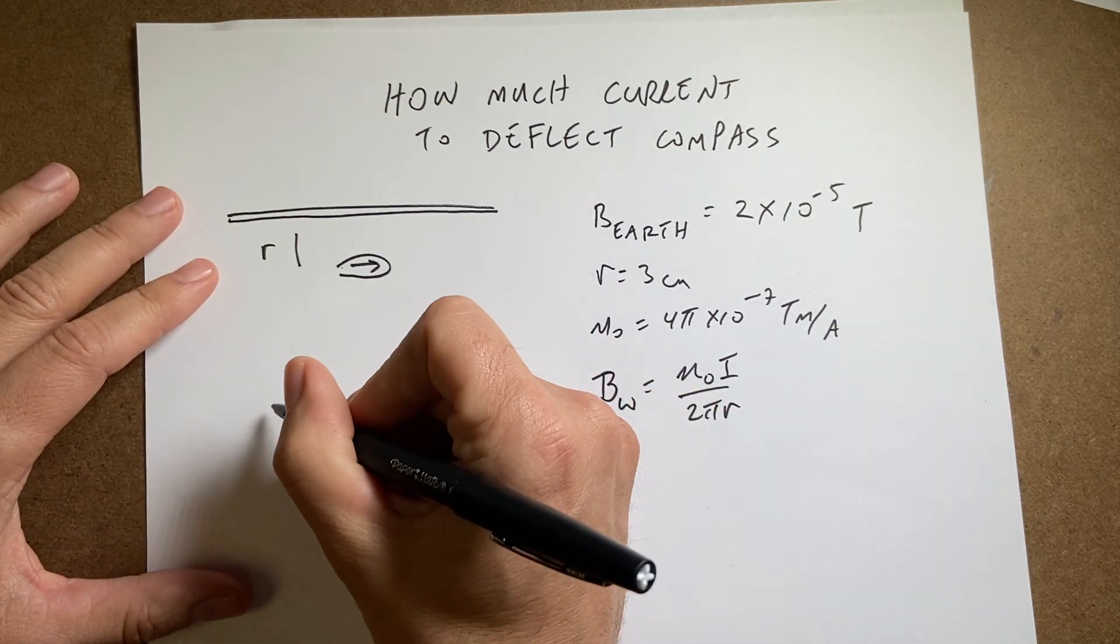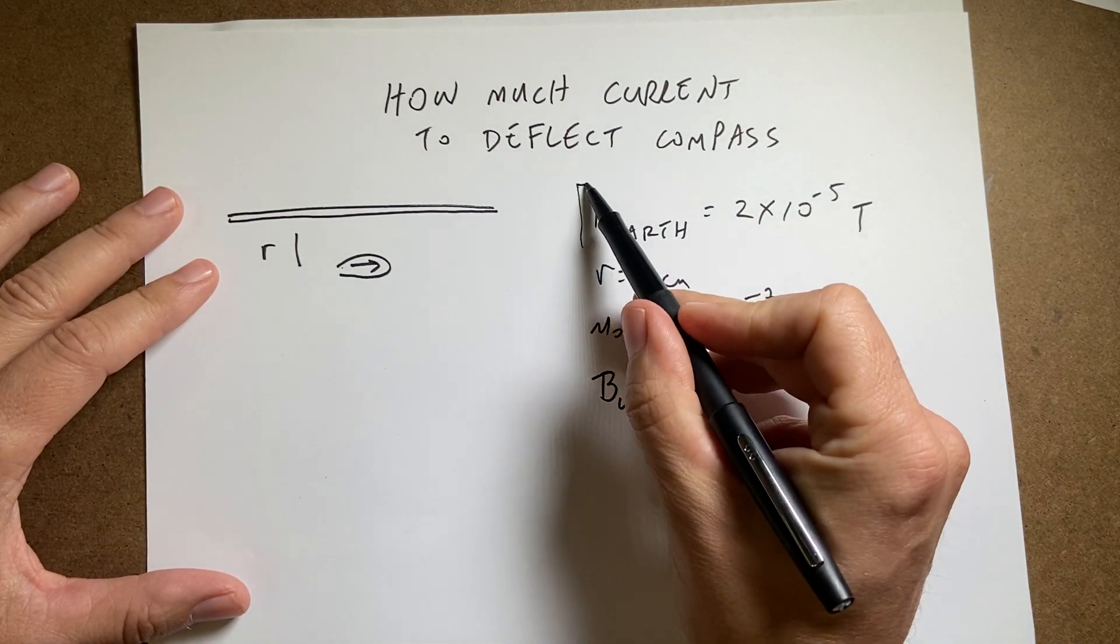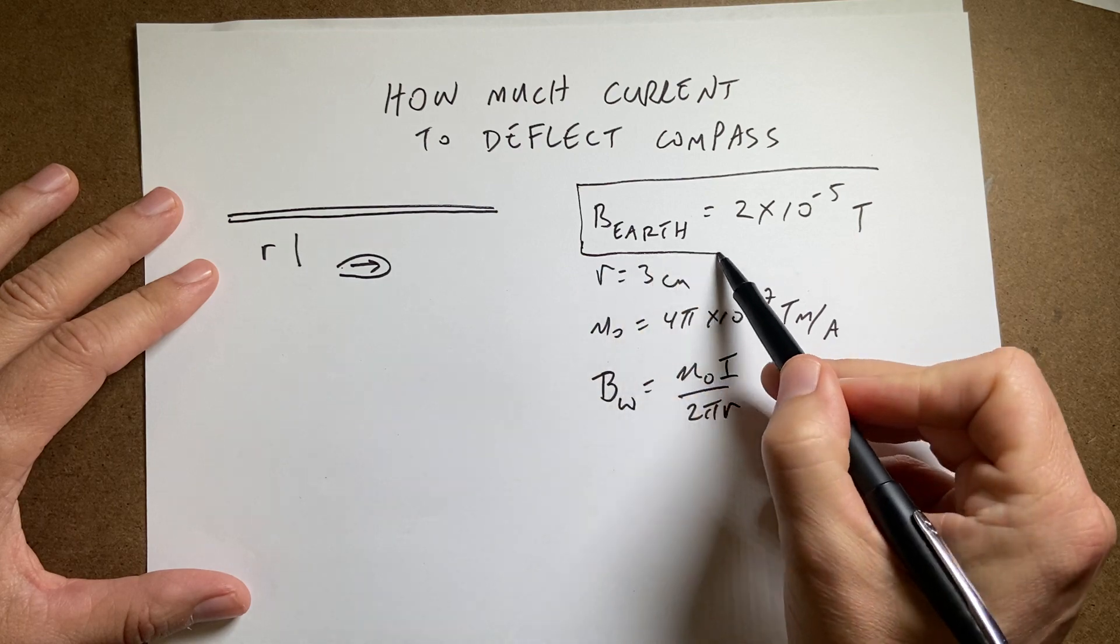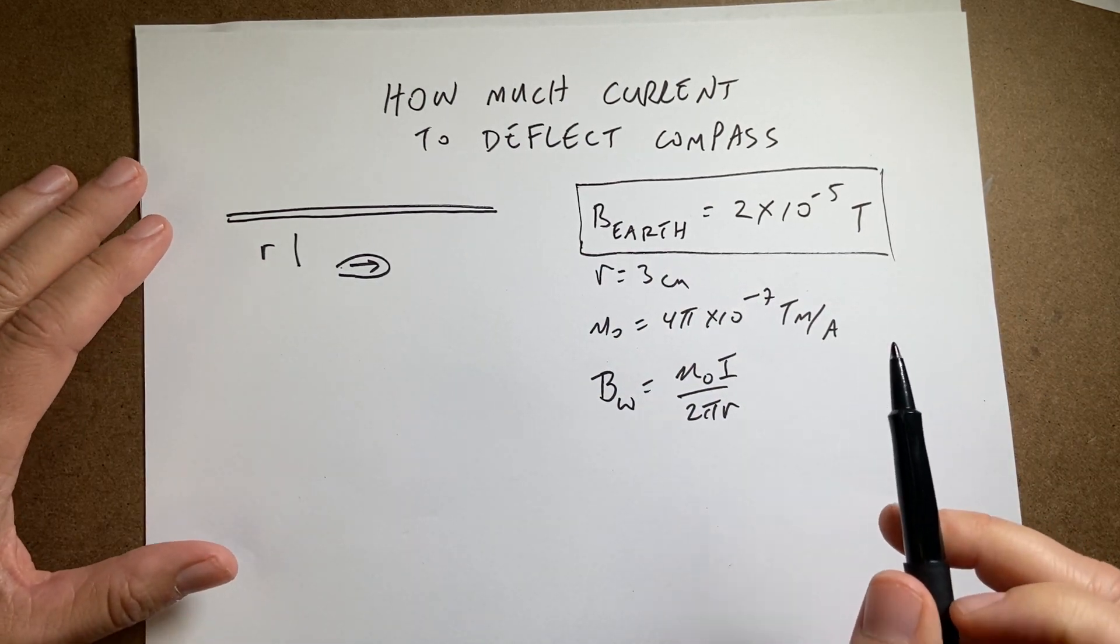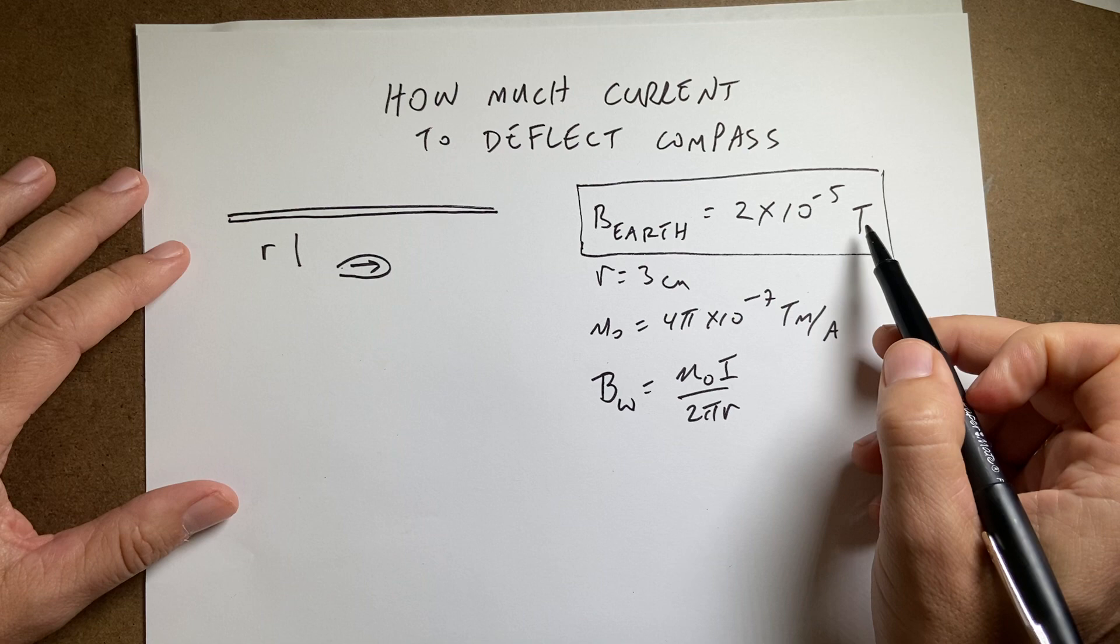Okay, so here is my compass. And this is the magnetic field. This is the horizontal component of the earth's magnetic field at this location. Two times ten to the negative fifth tesla.